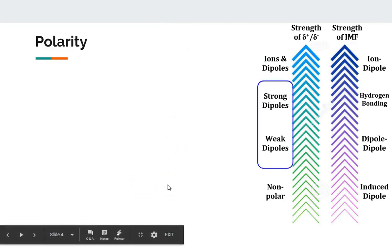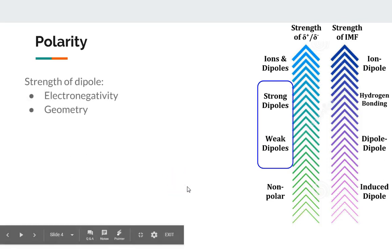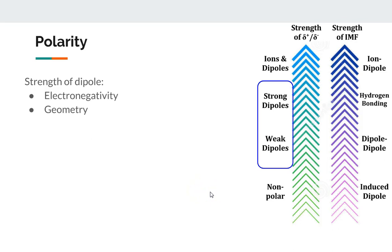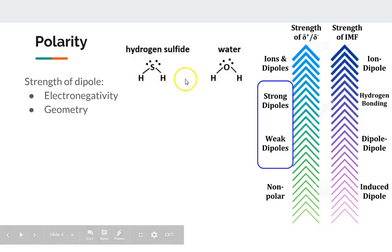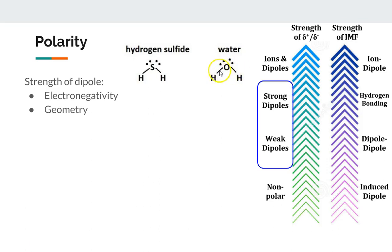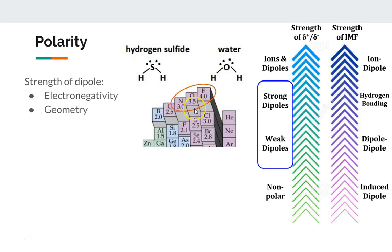Before we talk about dipole-dipole, we need to briefly discuss polarity and what makes a molecule polar. There are two main things: the electronegativity of the atoms and the geometry of the molecule. If we look at water compared to hydrogen sulfide, they're essentially identical except for the center atom. Oxygen is very electronegative — it pulls the shared electrons more towards itself than sulfur does in its bonds. This results in a greater partial negative on oxygen than sulfur. The most electronegative elements are nitrogen, oxygen, and fluorine. If you have these in your molecule, that especially strongly affects the polarity of the bond.